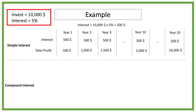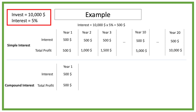With simple interest the investor is using the profits for anything he wants. The big difference with compound interest is that this time we will reinvest our profits. So after year 1 we would also get 5 percent interest on the 10,000 dollar investment, which gives us a profit of 500 dollar after year 1. But this time we will not just take the 500 dollar profit, but we will reinvest it.